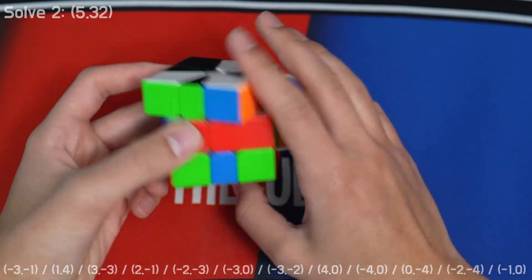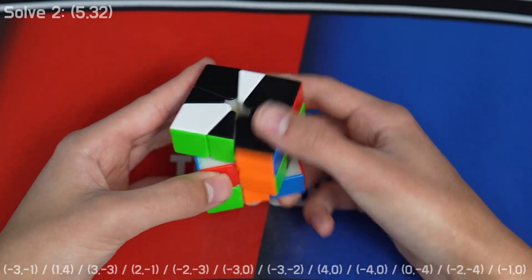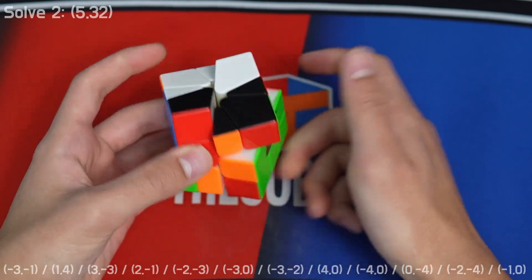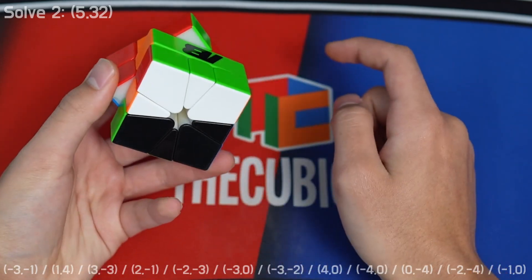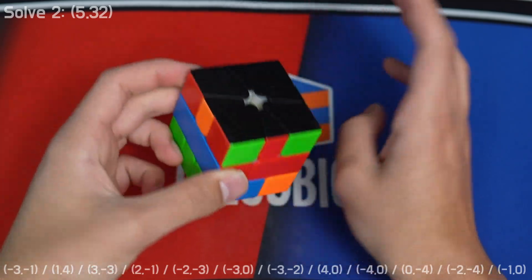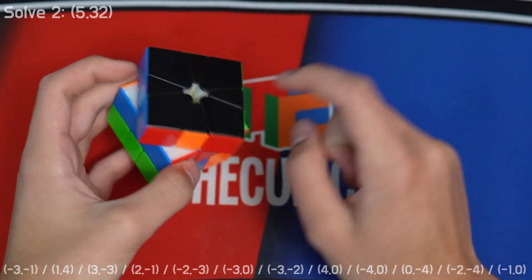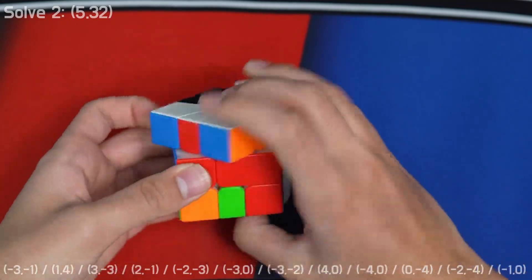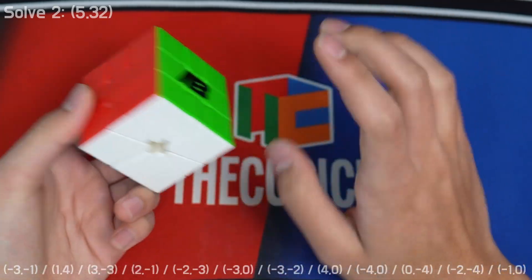And then I had to cancel on the flip, so I did a four seven with like a pinky ring flick right there. Then for PBL I got pretty lucky, it's just good U perms, and luckily I did not lock up, so it was a pretty good solve.